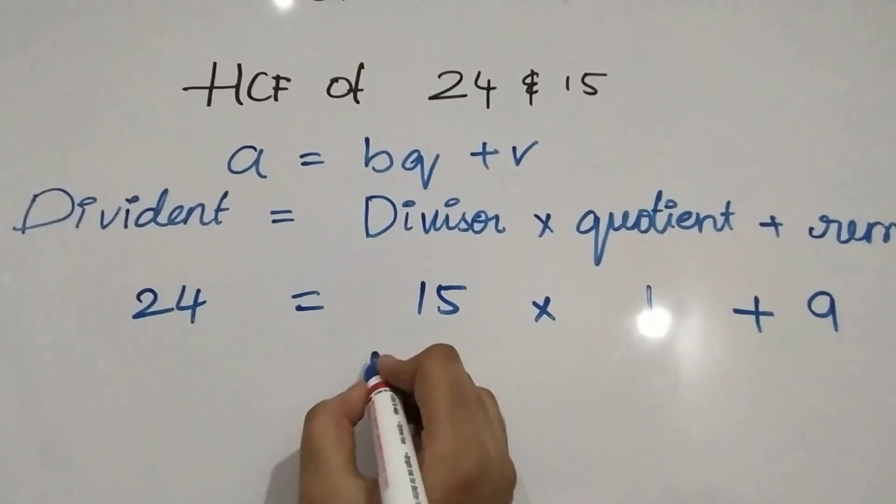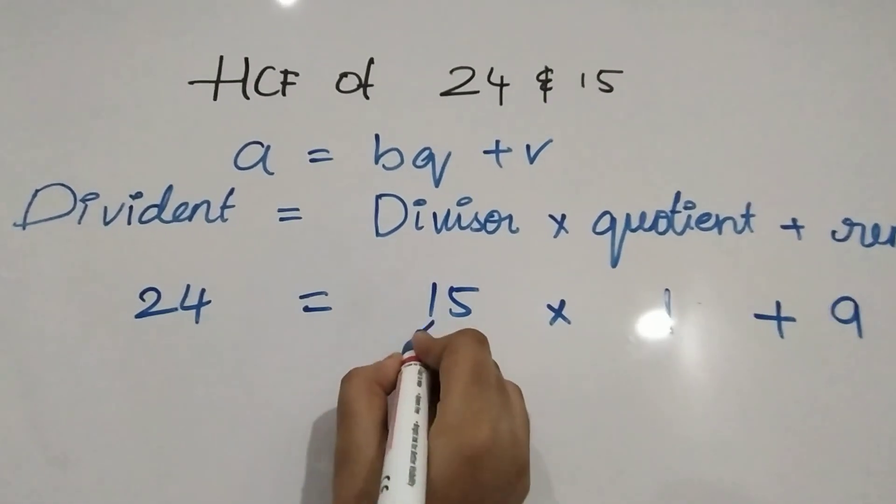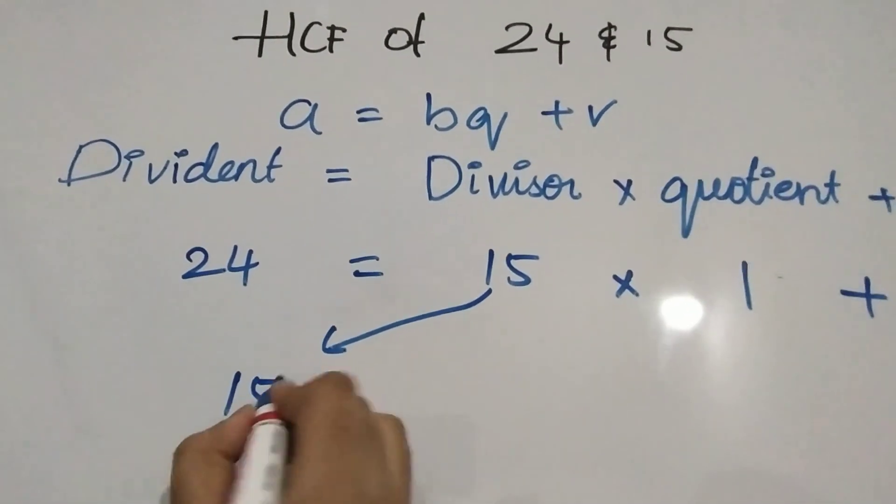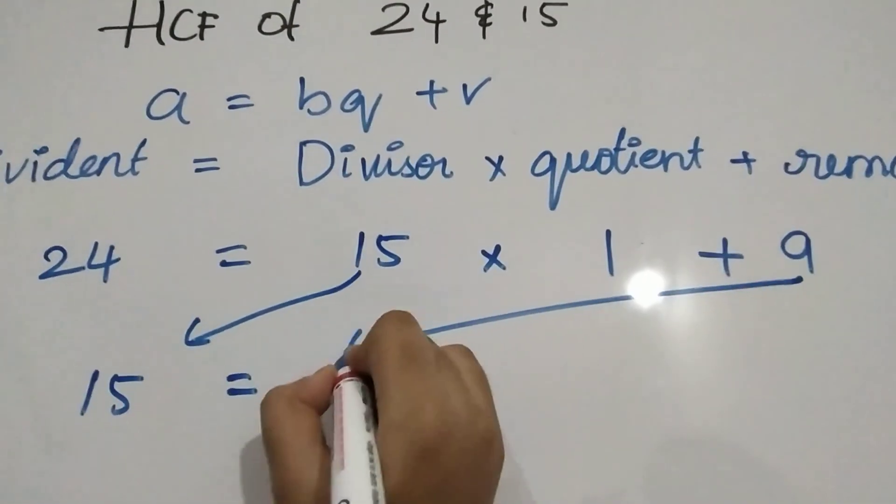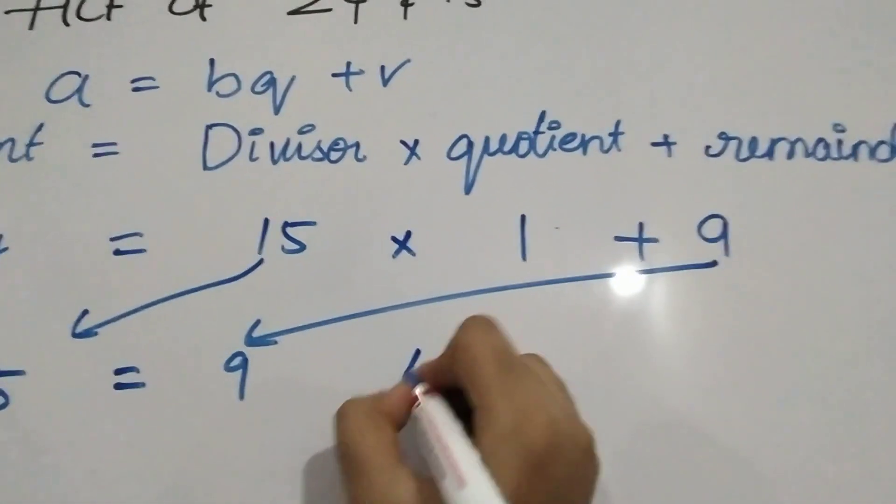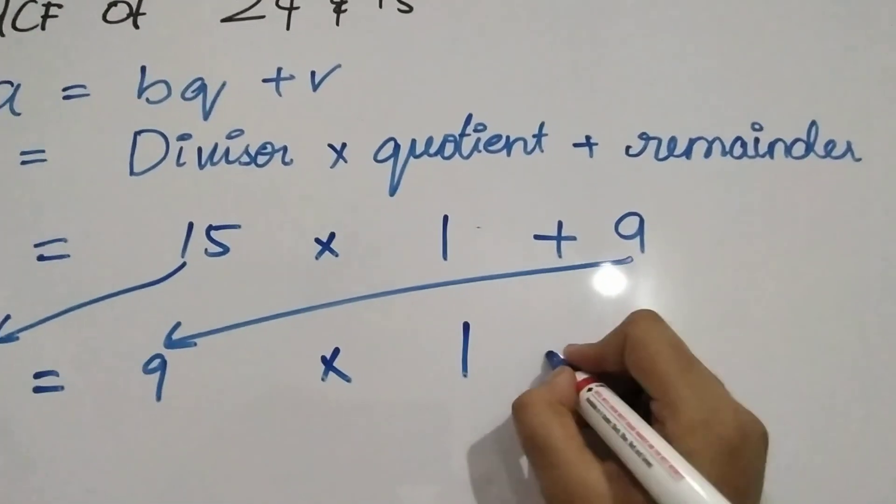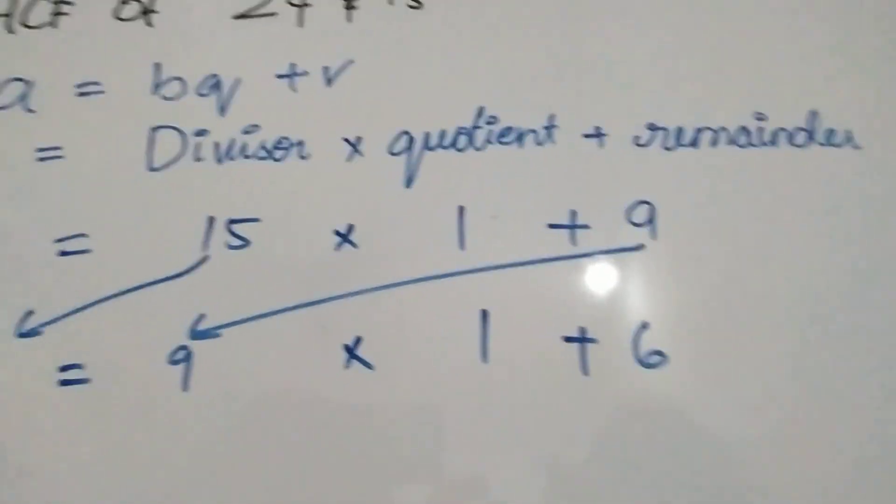So 15 will become the next dividend here and 9 will become the next divisor. And it goes once, 6 is the remainder.